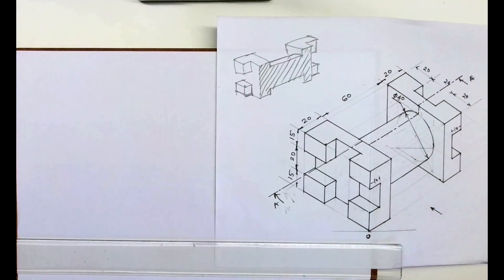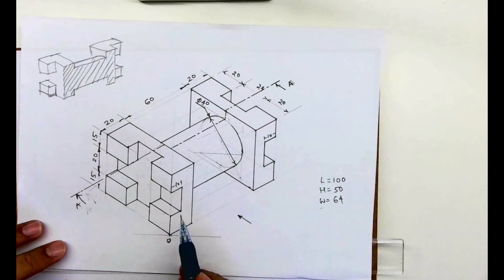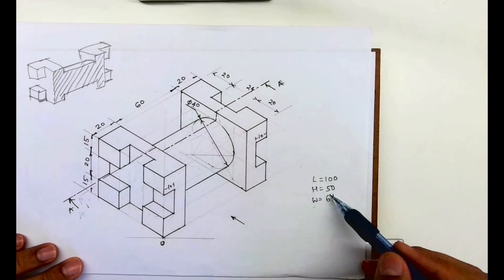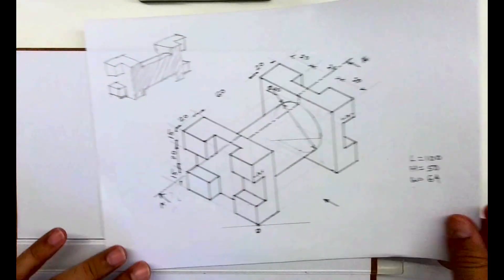Welcome to technical drawing. Today we'll see how to draw the isometric copy. The dimensions are: length is 100, 20, 60, 20; height is 50, 15, 20, 15; and width is 64.